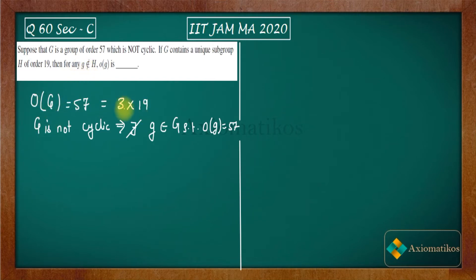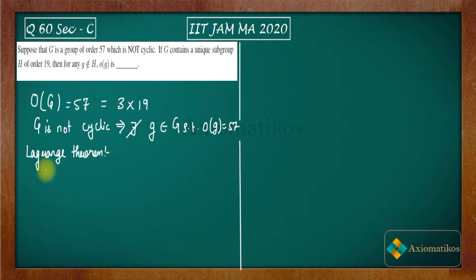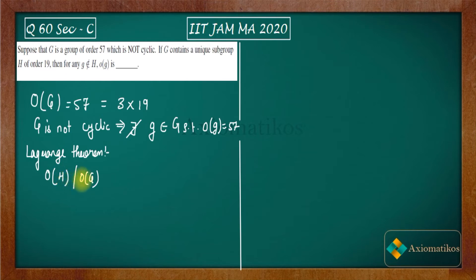Now, the order of G is 57. I will apply Lagrange's theorem here. Lagrange's theorem tells us that the order of any subgroup of a finite group always divides the order of the group.